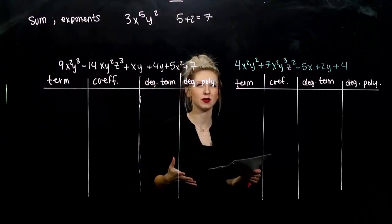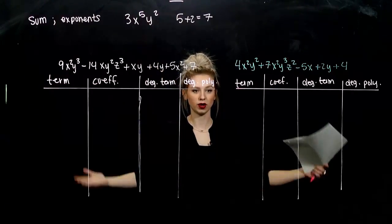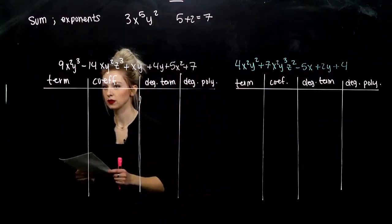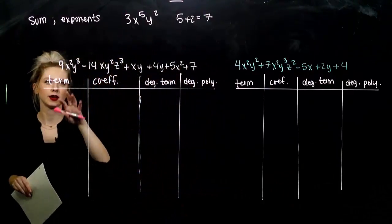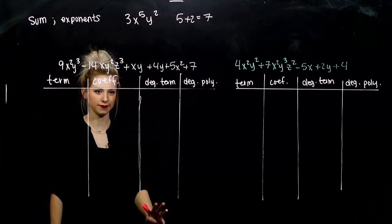So the highest power that we can see when we're combining, and if we have mixed terms, it's going to be the overall degree of the polynomial. So each of these, we want to take, talk about the term, coefficient on the term, the degree of that term, and then the overall degree of the polynomial.